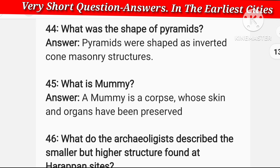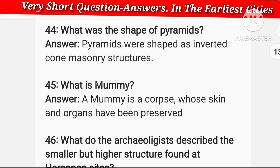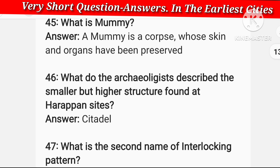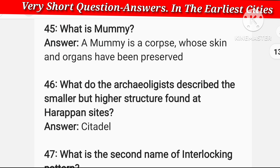What was the shape of pyramids? Pyramids were shaped as an inverted cone masonry structure — like an upturned cone, that is how they built this masonry structure.